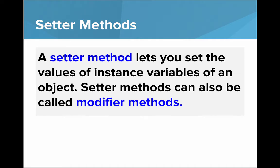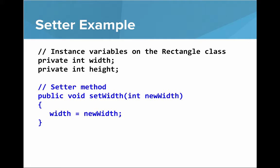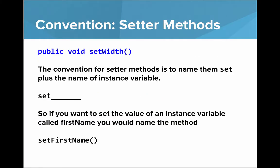Now on to setter methods. A setter method lets you set the values of instance variables of an object. Setter methods can also be called modifier methods. Here's a small example: the rectangle class has private int width and private int height. The setter method is public void setWidth and takes a parameter called int newWidth. It sets the instance variable width equal to newWidth, changing its value. The convention for setter methods is to name them 'set' plus the name of the instance variable — so if you want to set firstName, you name the method setFirstName.